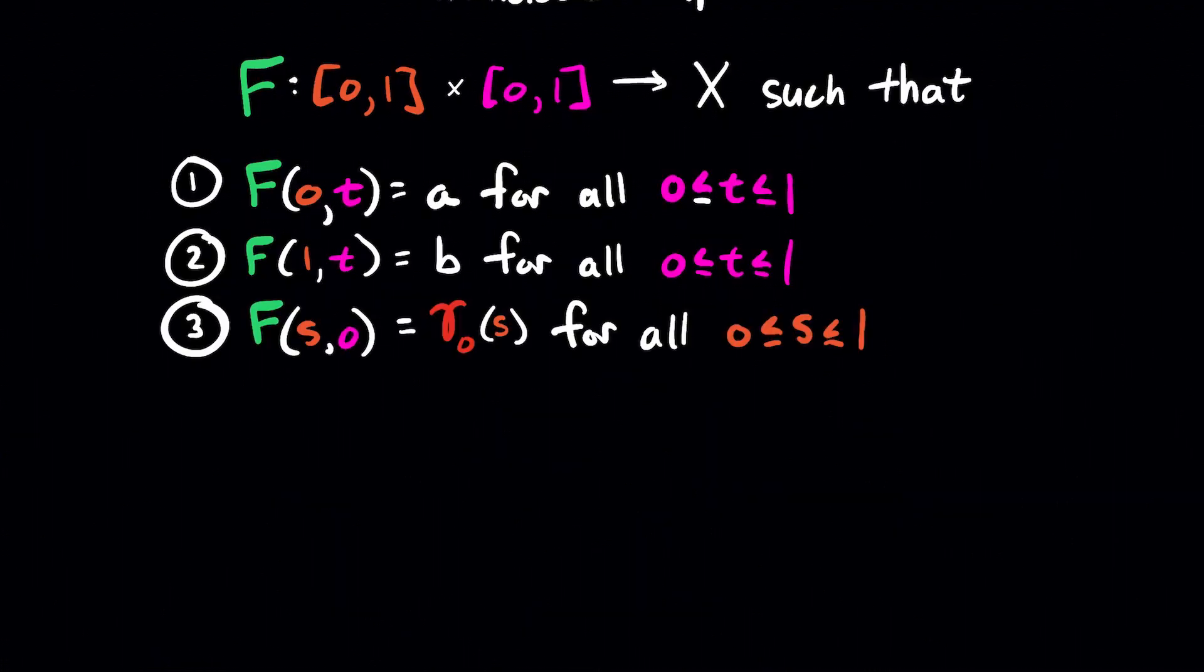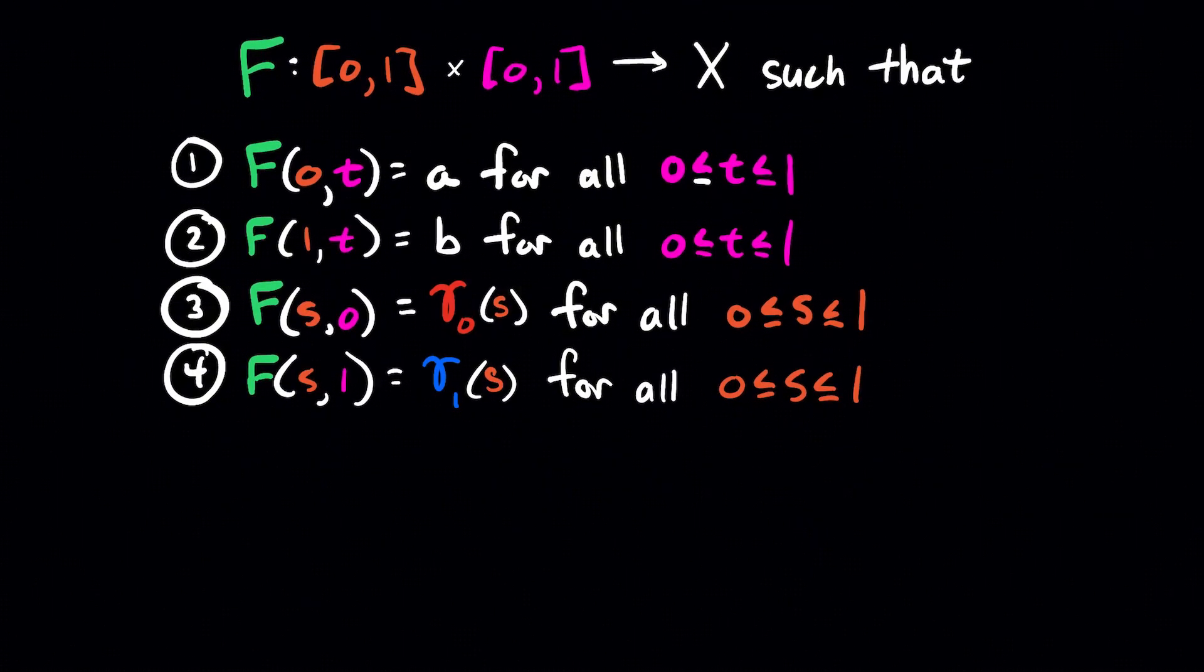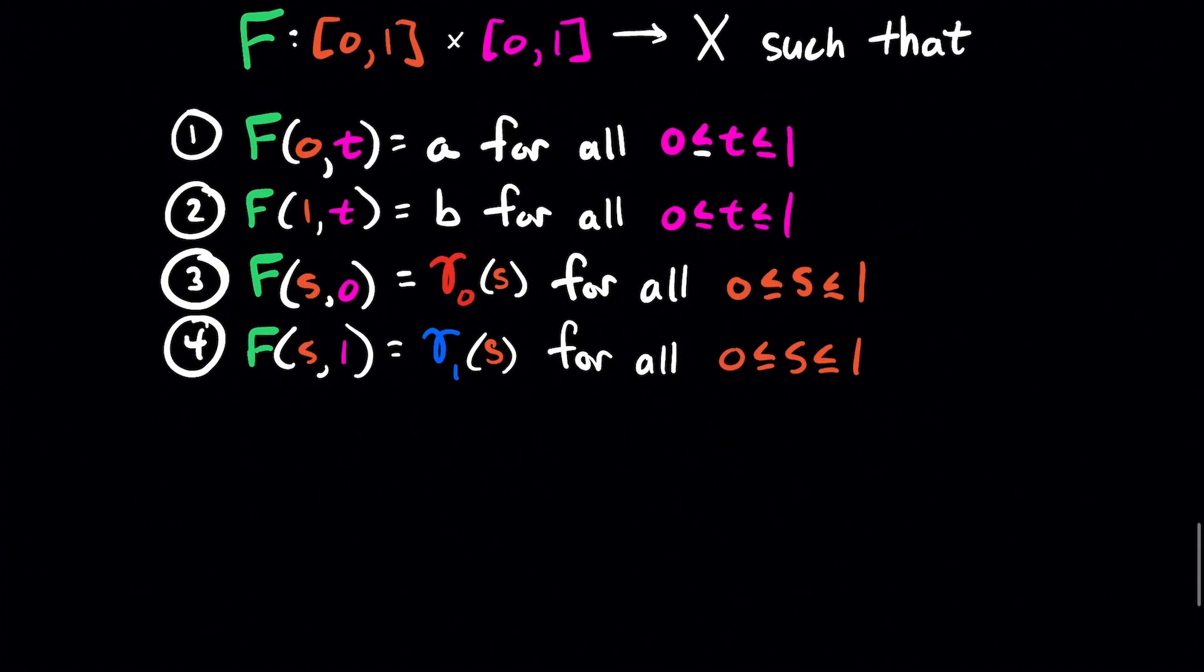F of (S,0) is gamma 0 of S for all S's between 0 and 1. F of (S,1) is gamma 1 of S for all S between 0 and 1. Now you should compare these to the first four things that we wrote down when we were looking at what the homotopy should satisfy based on the video from before. And you see that we're just using a little bit different notation to express those same ideas.